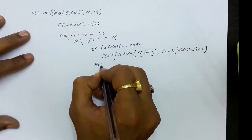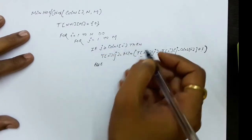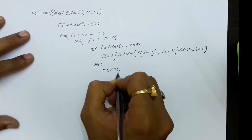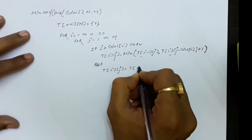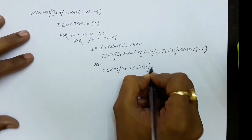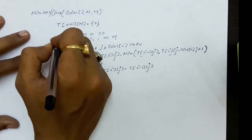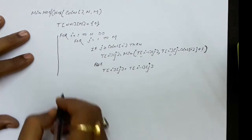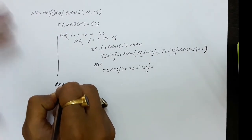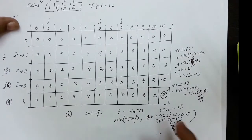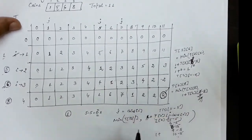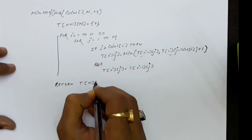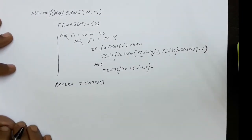Otherwise, if j is less than coin[i], the entry of the above row is copied: T[i][j] = T[i-1][j]. Once the loop finishes, we have the information about the minimum number of coins for the required denomination. That answer is found at the last row and last column of the table — T[n][m]. This is the answer.